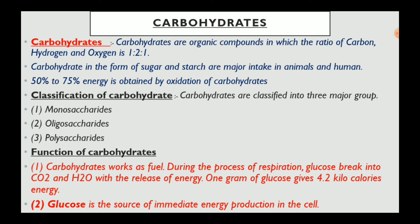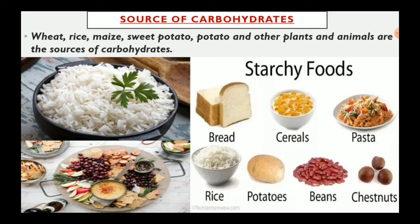Glucose is the source of immediate energy production in the cell. The sources of carbohydrates include rice, sweet and starchy foods, potatoes, beans, and chestnuts.